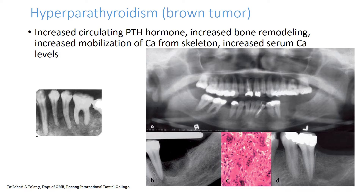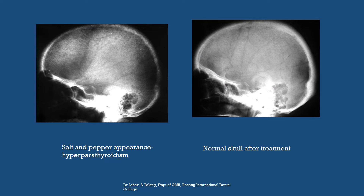It is important to understand that just based on the radiograph you would not be able to determine what type of systemic disorder it is, but you could suspect that there is some systemic involvement causing changes in bone density. With hyperparathyroidism, you could also see a salt and pepper appearance of the skull. Once the disease process is corrected, the skull — or any bone — can actually return back to normal after treatment is done.